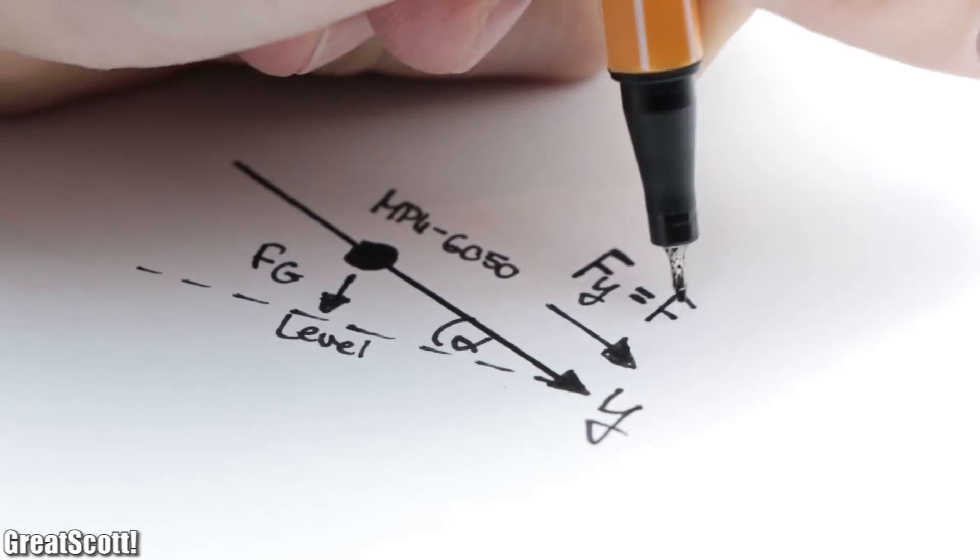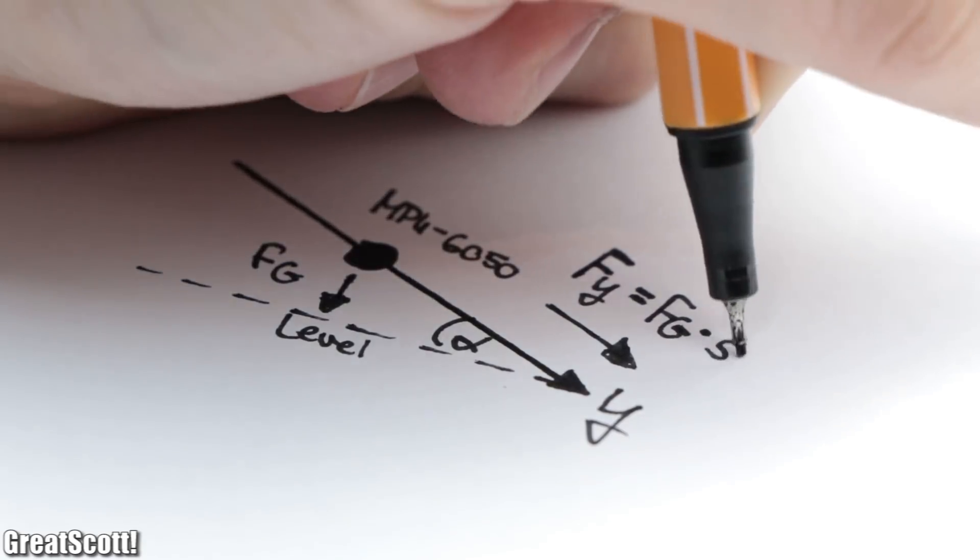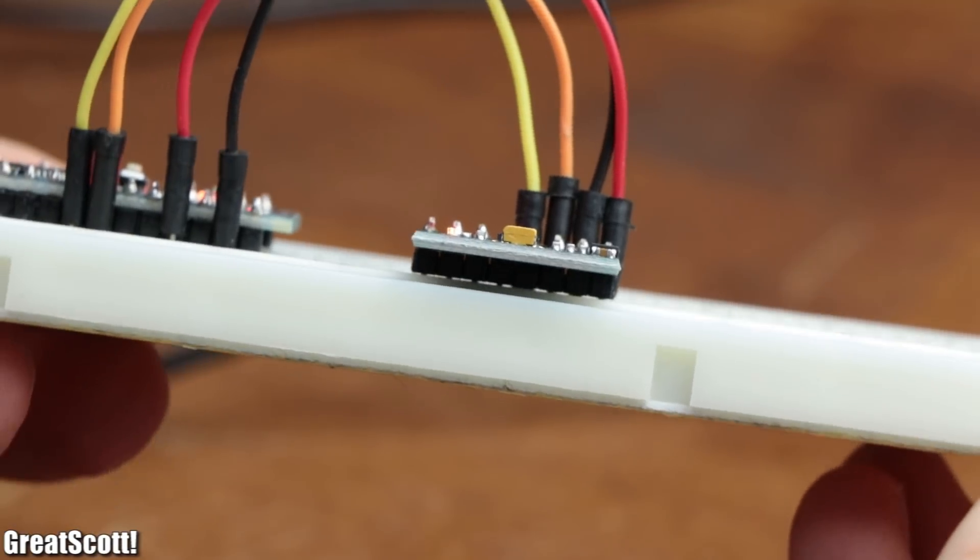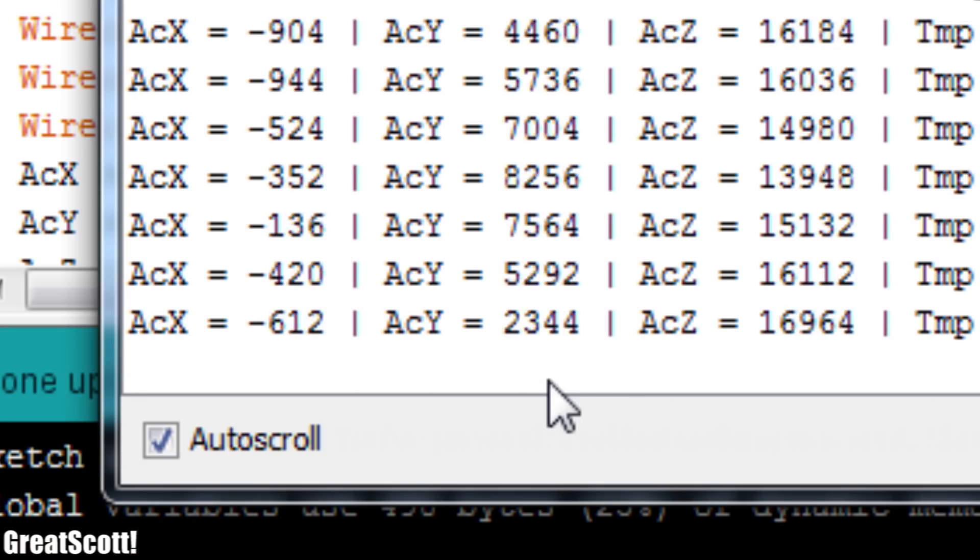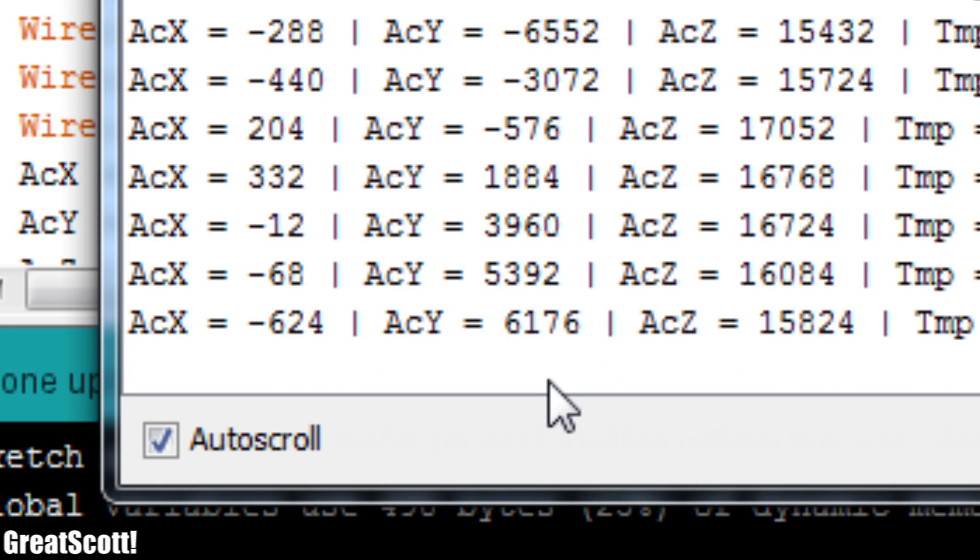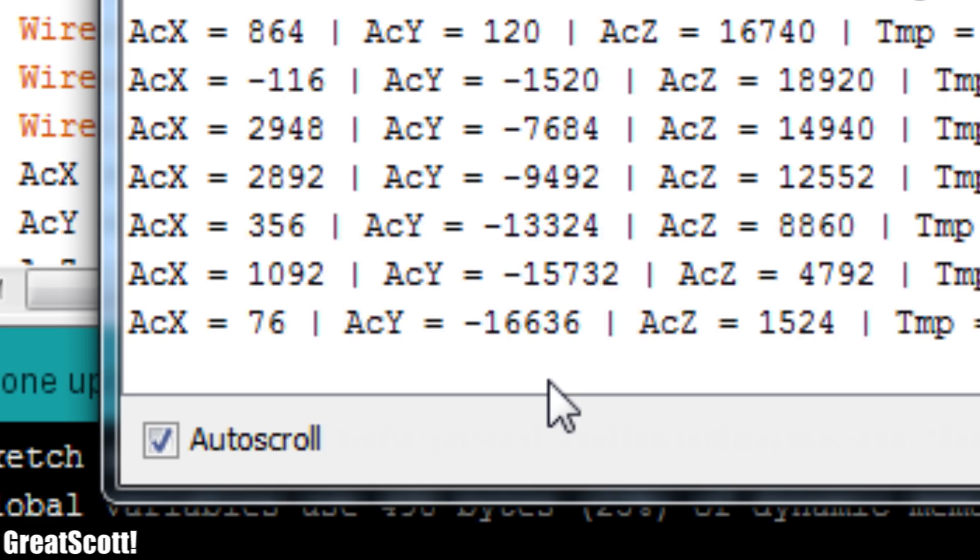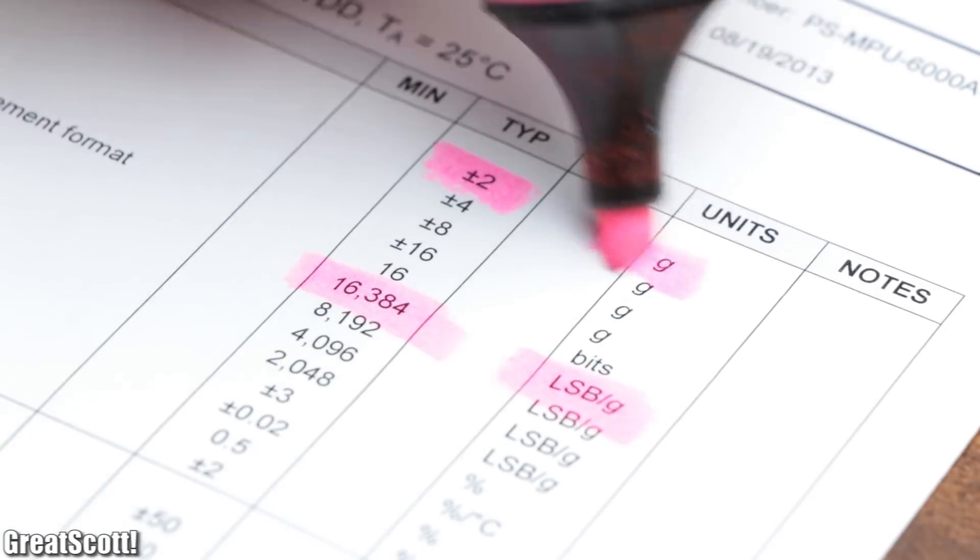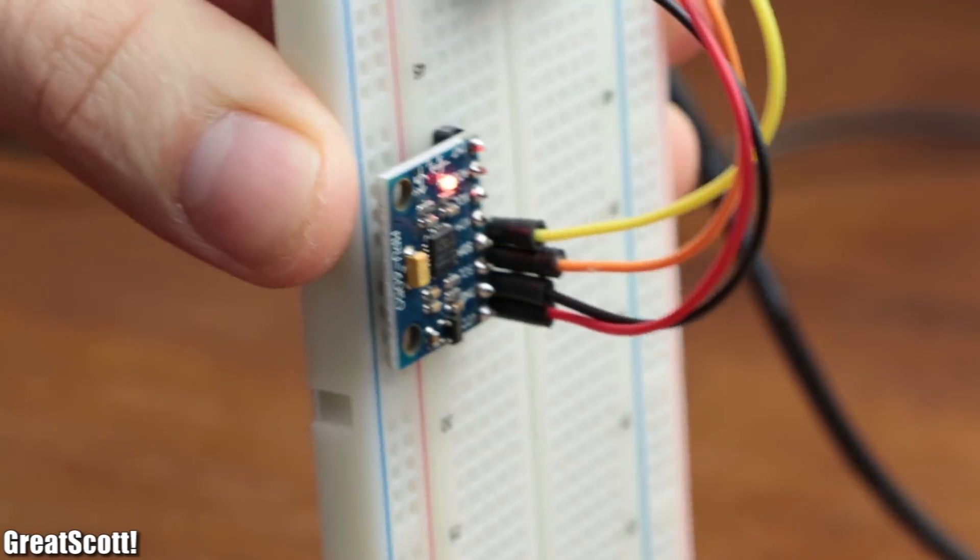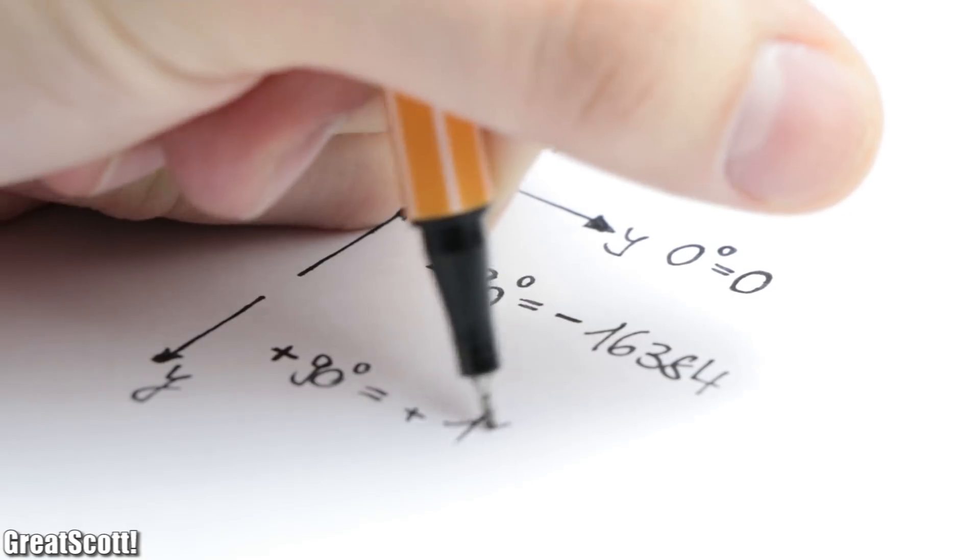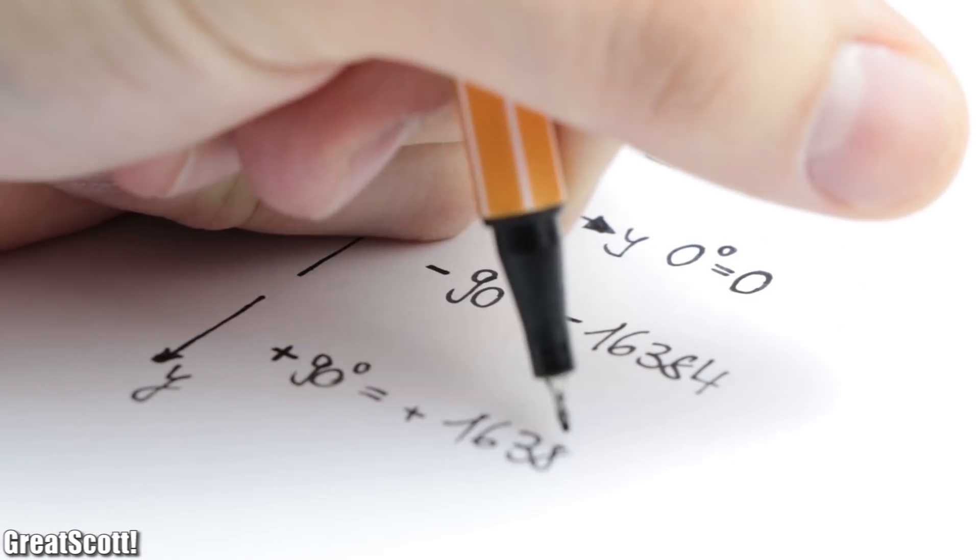But if we have an unlevel surface, a part of the gravitational acceleration affects the y-axis, which means that by tilting the breadboard left and right, the serial monitor values oscillate around the zero point in the positive and negative range. The maximum number of plus or minus 16,384, which represents 1g at a full-scale range of 2g, is then achieved when the angle equals plus or minus 90 degrees. This way we have a proportional relation between the acceleration values and the angle of the IC.